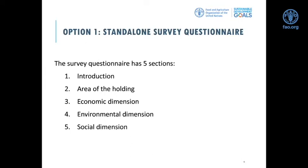The standalone survey questionnaire is structured in five distinct sections. The first section covers introduction to the survey module and identification of the holding and holder. The second section collects information about area of the holding by agriculture land use classes and land tenure. Section three has questions related to the economic dimension. Section four covers the environmental dimension, and section five addresses the social dimension.